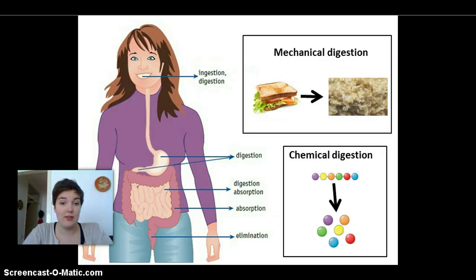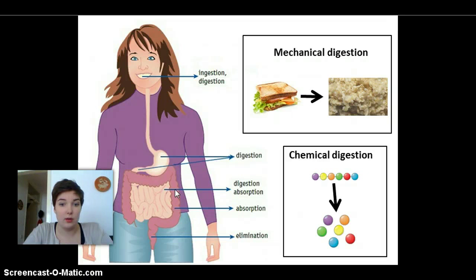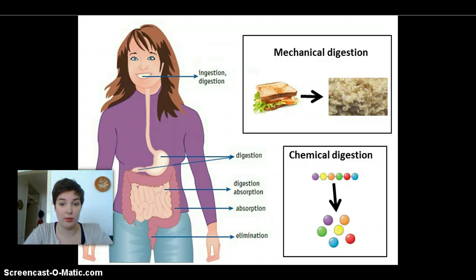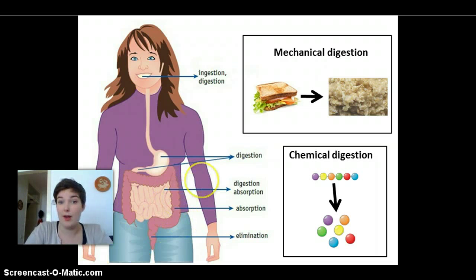After that, in the intestines right here, we can see that there's also some digestion going on, but also absorption — the nutrients going into our bloodstream. And finally, everything we don't need is eliminated through our anus.